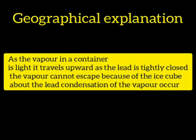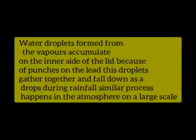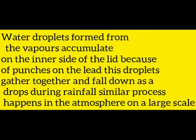Geographical Explanation: As the vapor in the container is light, it travels upward. As the lid is tightly closed, the vapor cannot escape. Because of the ice cubes above the lid, condensation of the vapor occurs. Water droplets formed from the vapors accumulate on the inner side of the lid. Because of the punches on the lid, these droplets gather and fall down as a drop. During rainfall, a similar process happens in the atmosphere on a large scale.